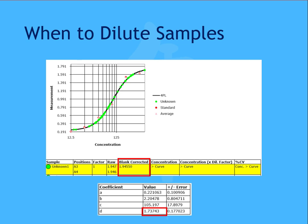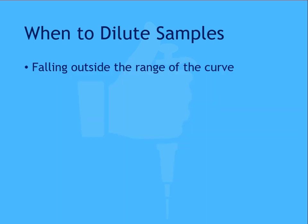Looking at the chart, we can see that as the y-axis value increases, the x-axis value also increases, meaning the result for unknown one is too concentrated to be measured. By diluting this sample, we may be able to bring the result back within the reportable range of the curve.